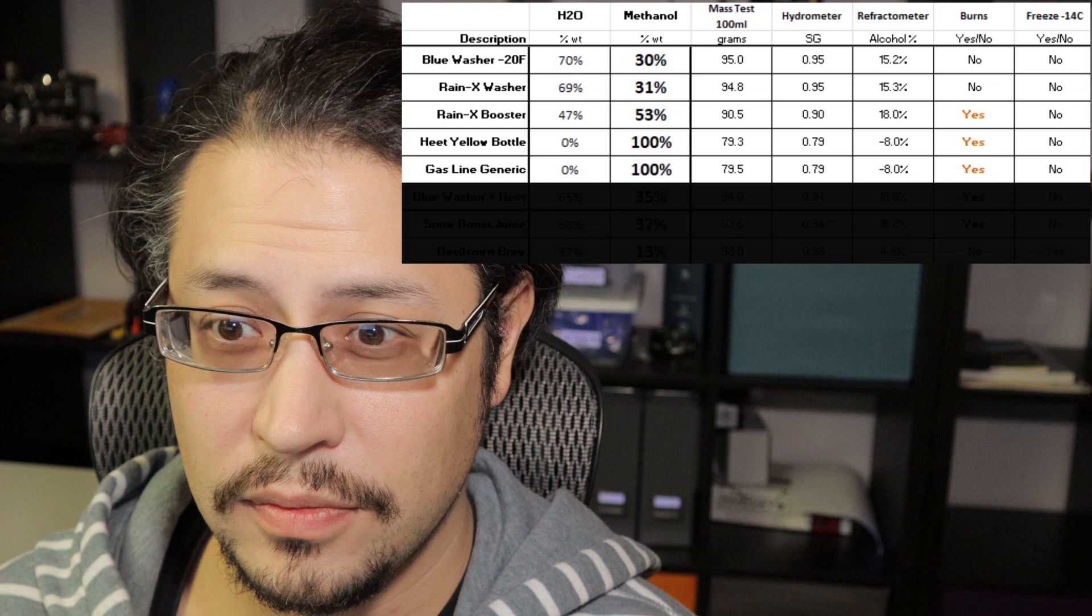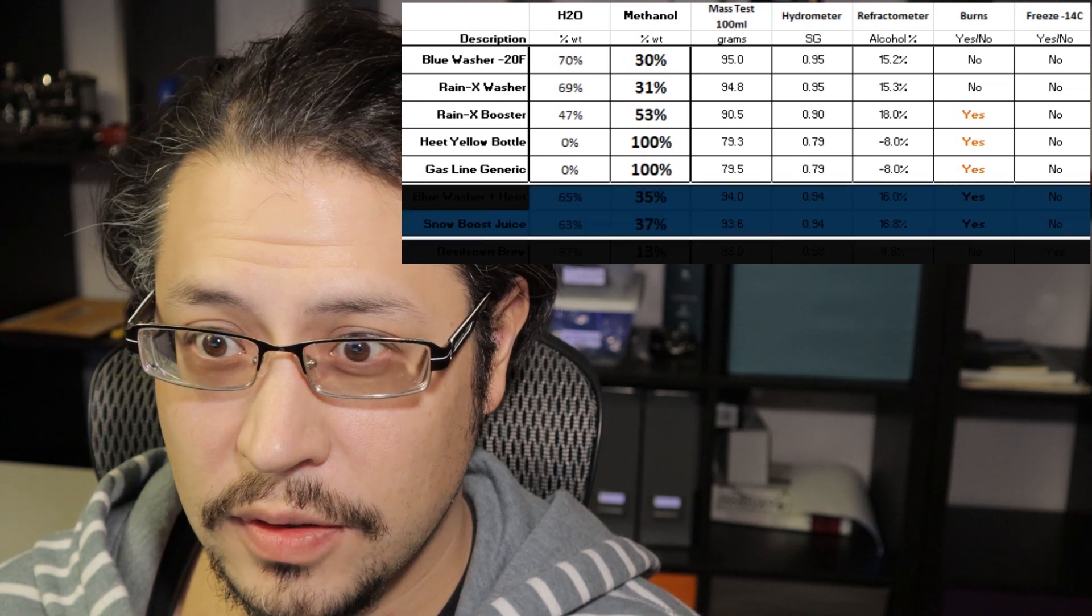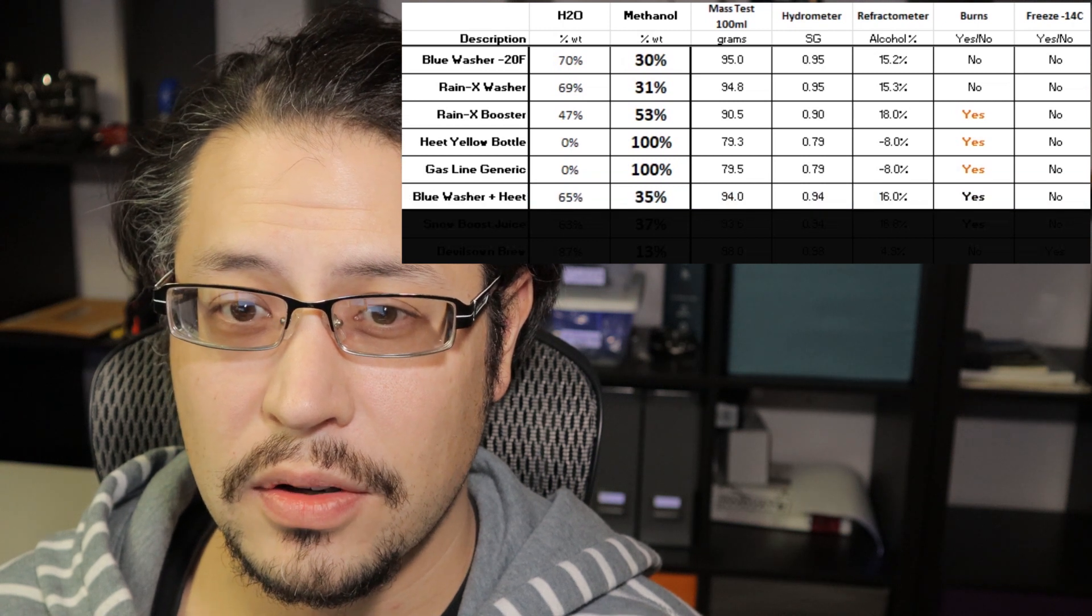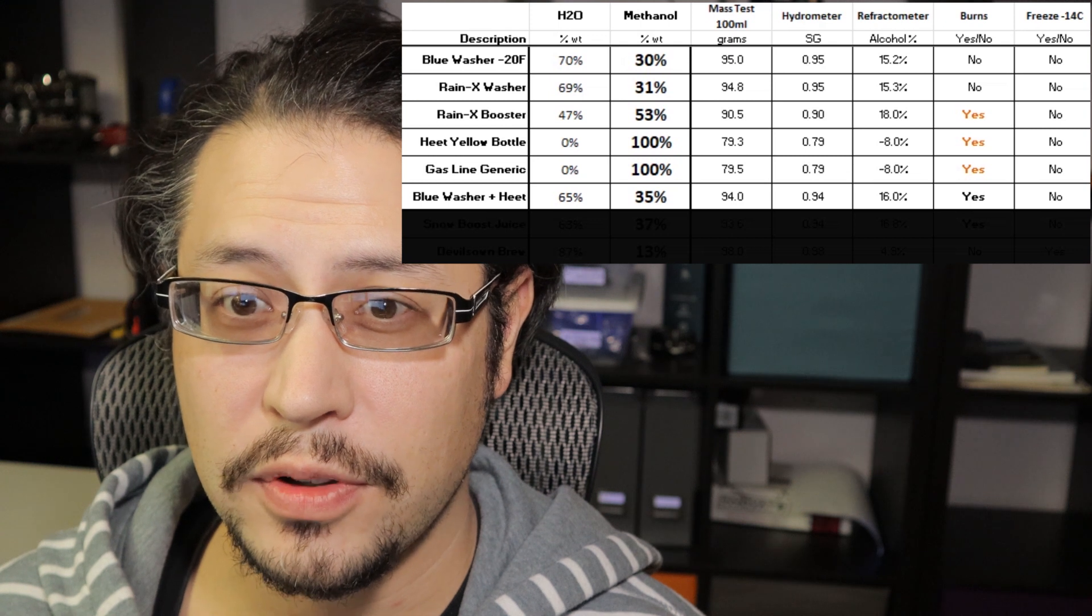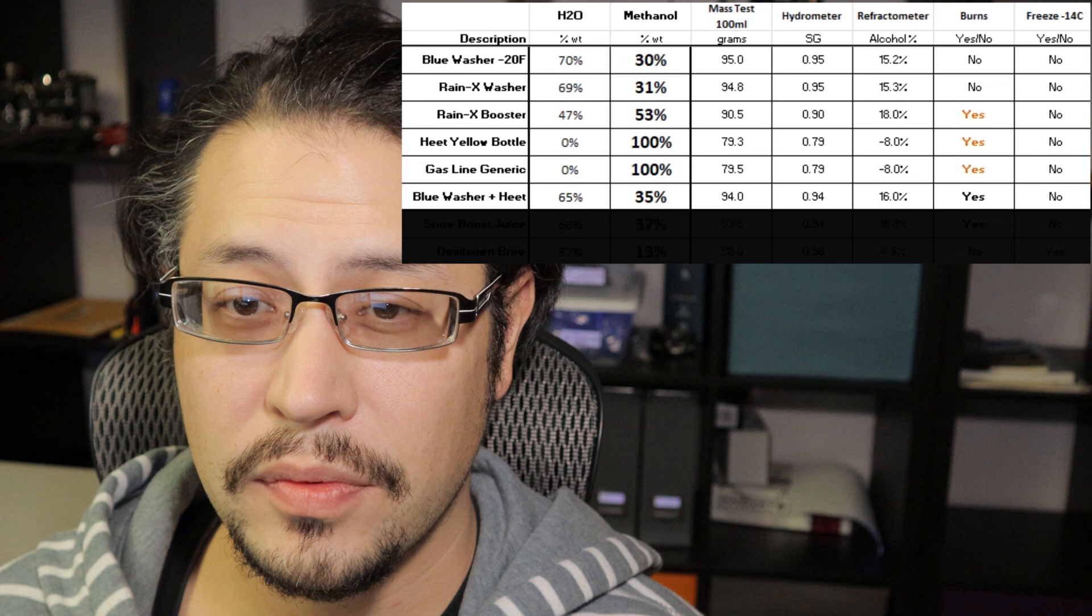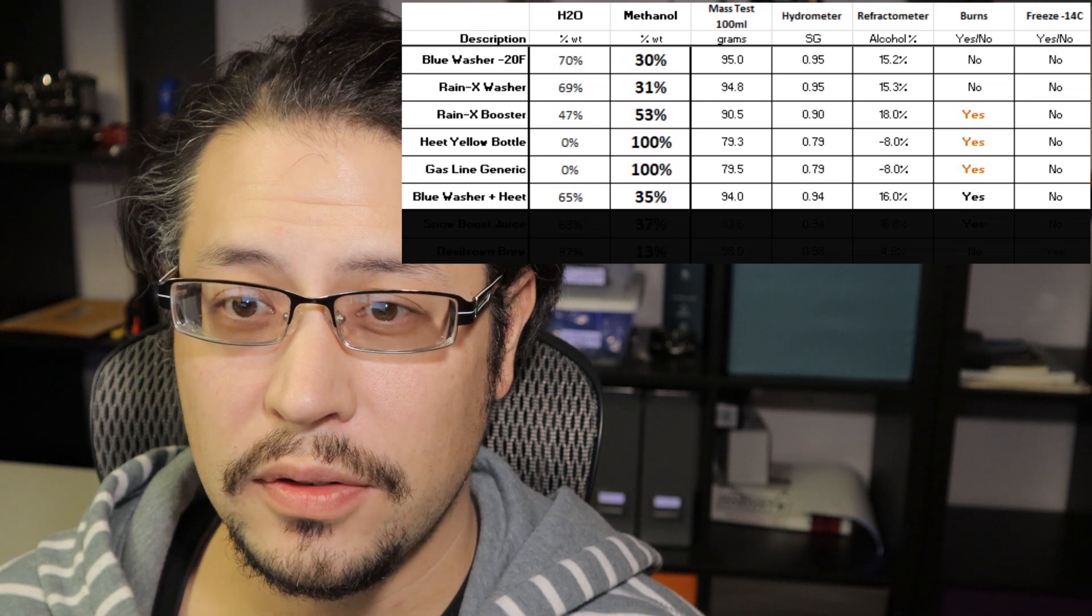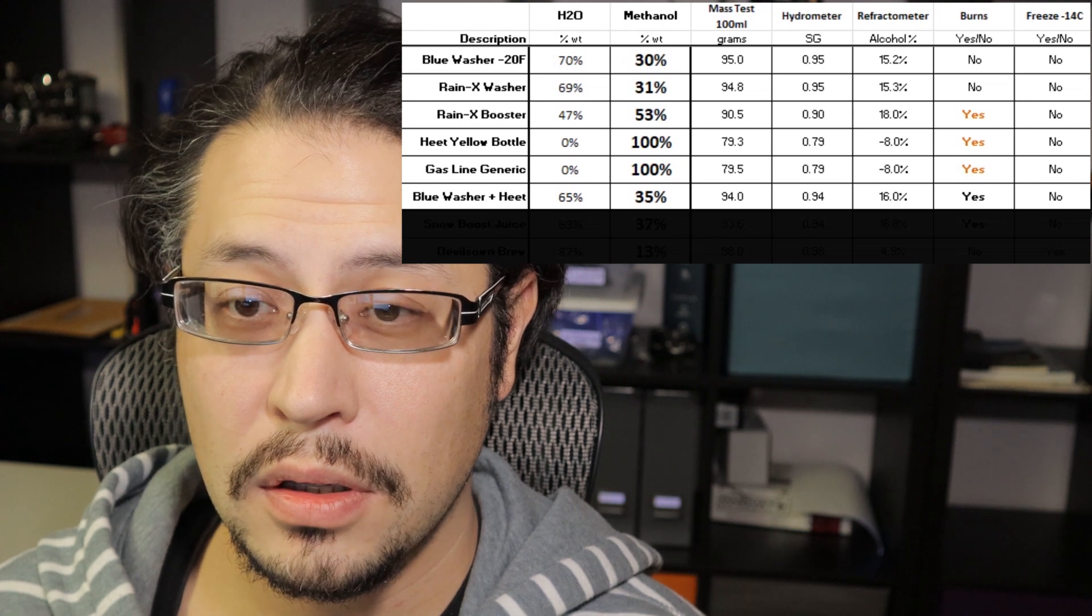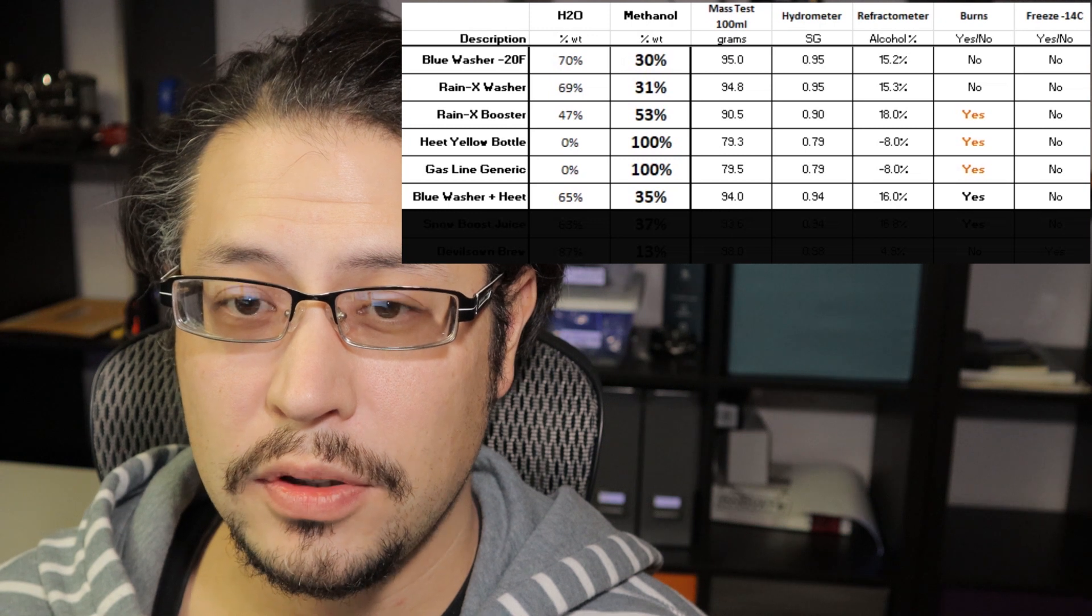This is blue washer fluid minus 20, blue washer fluid plus a bottle of heat. The result of that was approximately 35% methanol content, which is pretty effective.